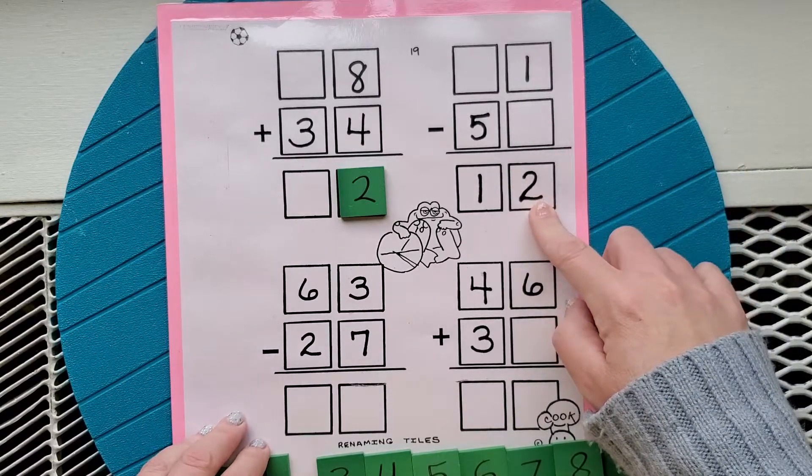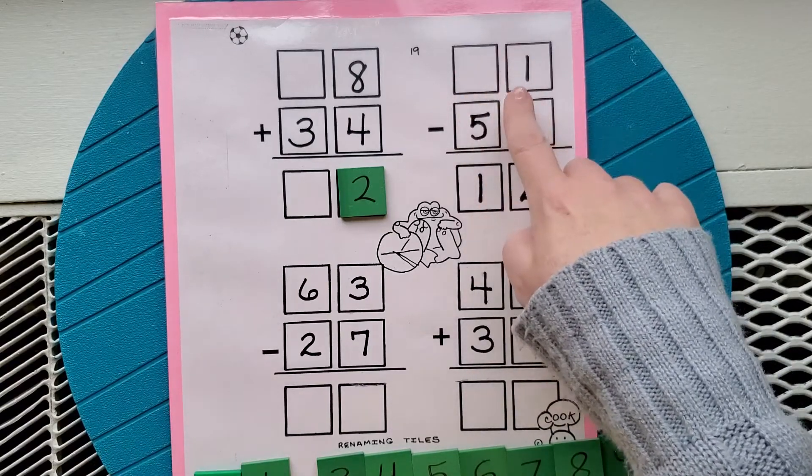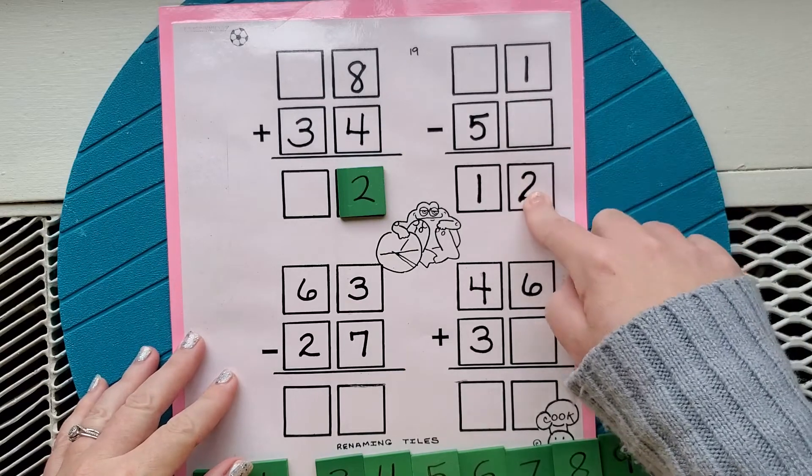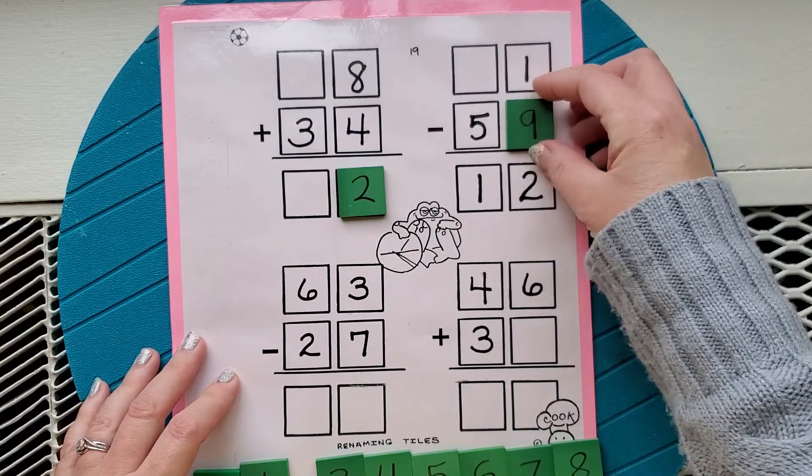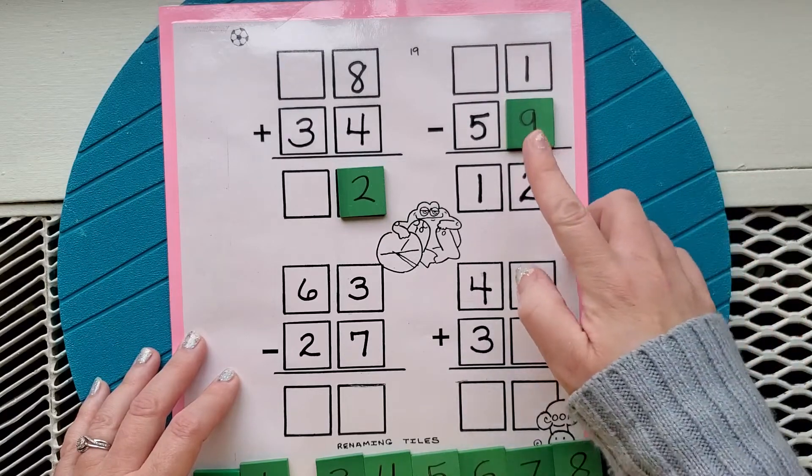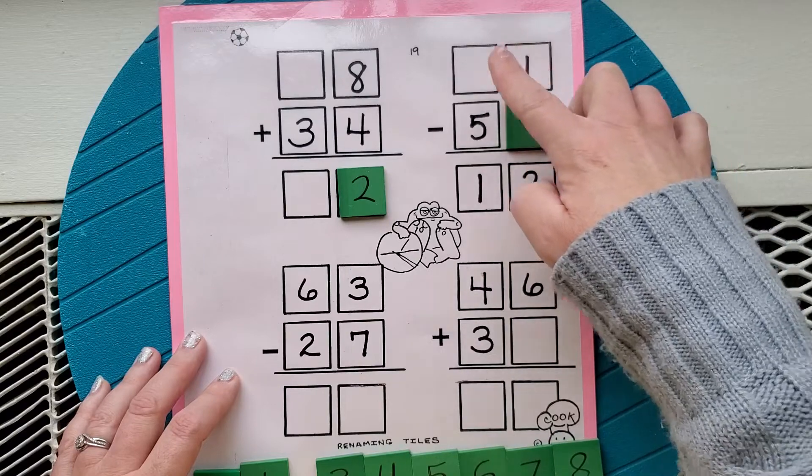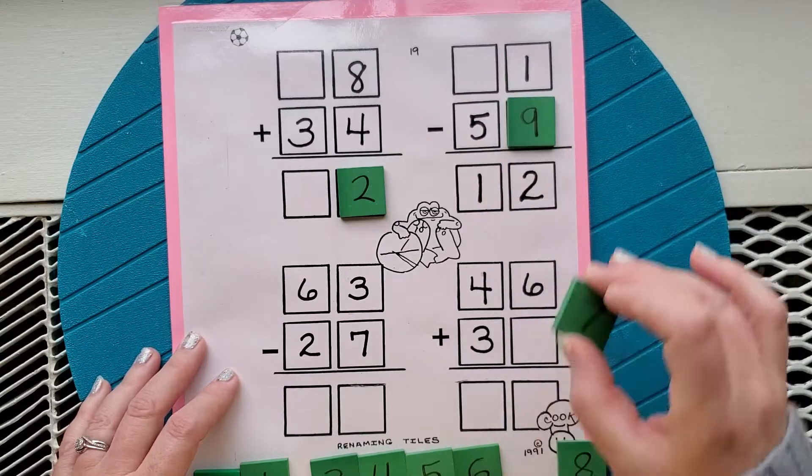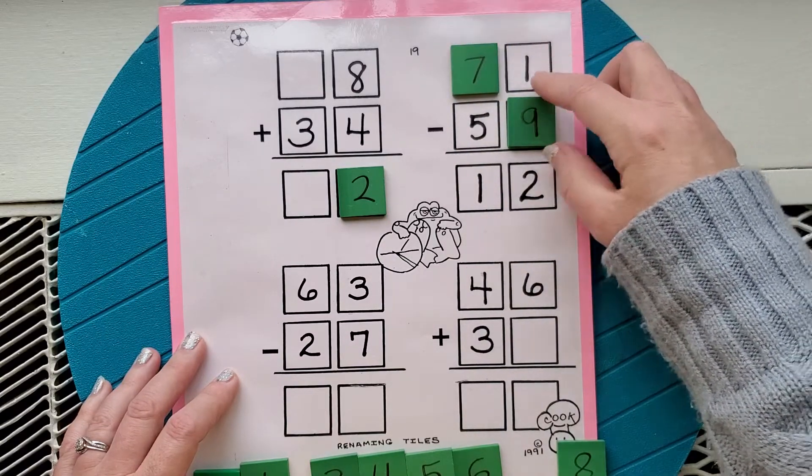1 minus something equals 2. Well, 1 minus nothing would equal 2, so that must mean we're going to borrow. So this must be 11 minus something equals 2. Well, I know that 11 minus 9 equals 2. And then something minus 5 equals 1, and we know we borrowed from them. So it must be bigger than 6, so it must be 7. The reason why I know that is I borrowed one from here, made that 11.